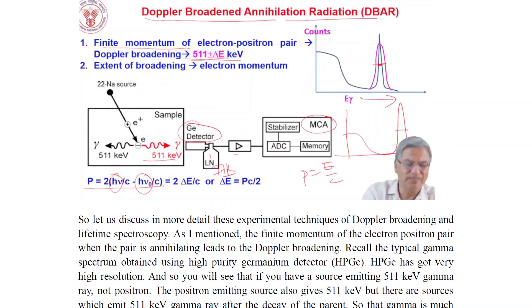Doppler-broadened annihilation radiation (DBAR) arises from the finite momentum of the electron-positron pair. The Doppler broadening gives 511 ± ΔE keV; the extent of broadening gives the electron momentum. Plotting counts versus E-gamma shows the Doppler broadening. Using a 22Na source and a germanium detector with stabilizer and MCA: p equals 2hν/c minus hν₀/c, which gives 2ΔE/c, so ΔE equals pc/2.